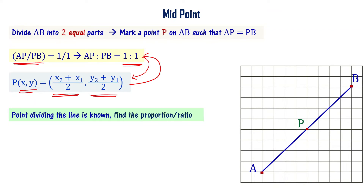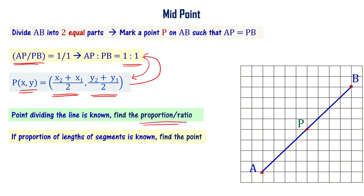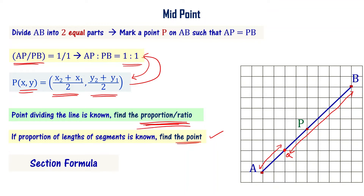If the point dividing the line is known, we can find the ratio. If the proportion of lengths of segments are known, then we can find the point. This is what the section formula helps us with — section formula is going to help you find the ratio if the point of division is known, or if proportion of lengths are known, then we can find the coordinates of the point with the help of section formula.